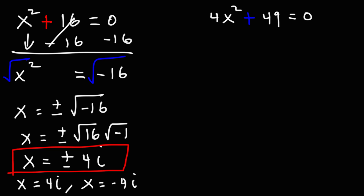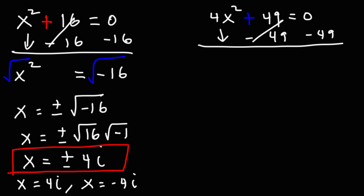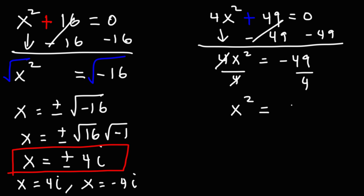Now, let's move on to the next one. In this example, we're going to start off with the same procedure. We're going to subtract both sides by 49. So we're going to have 4x squared is equal to negative 49. Before we take the square root of both sides, let's divide both sides by 4. So right now we have x squared is equal to negative 49 over 4.